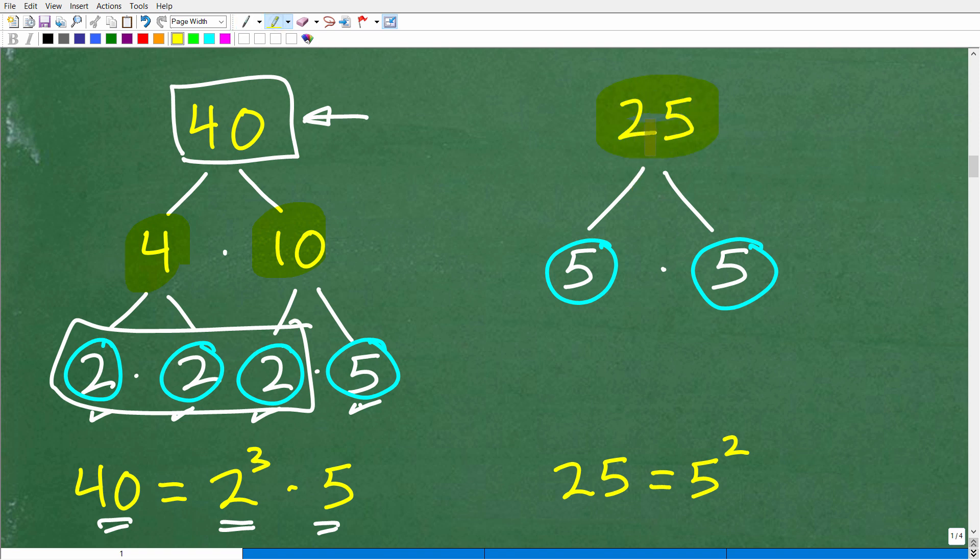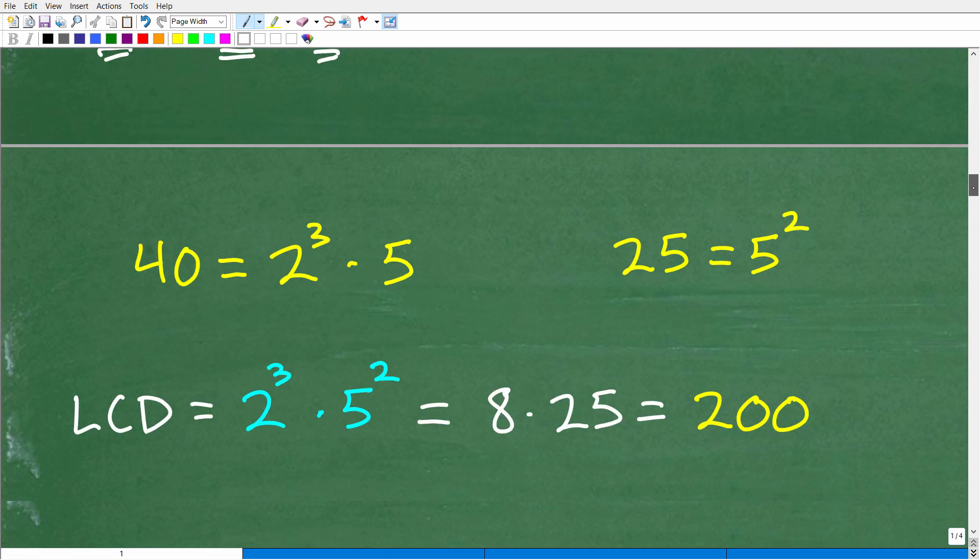So that's going to be pretty easy. So five times five, these are both prime numbers. So 25 is the same thing as five squared. All right. So now we have our prime factors of our respective denominators. Now we can easily calculate the LCD.